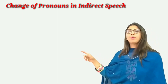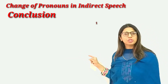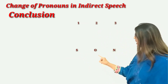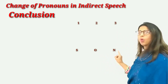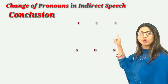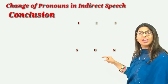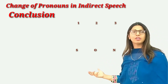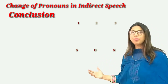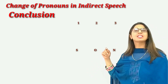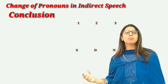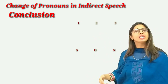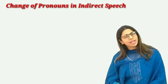Let us combine the conclusions: one, two, three — S, O, N. So we get: one, two, three — SON. Isn't it wonderful? I hope you will enjoy this easy technique. It is very easy to remember: one, two, three — SON. Thank you.